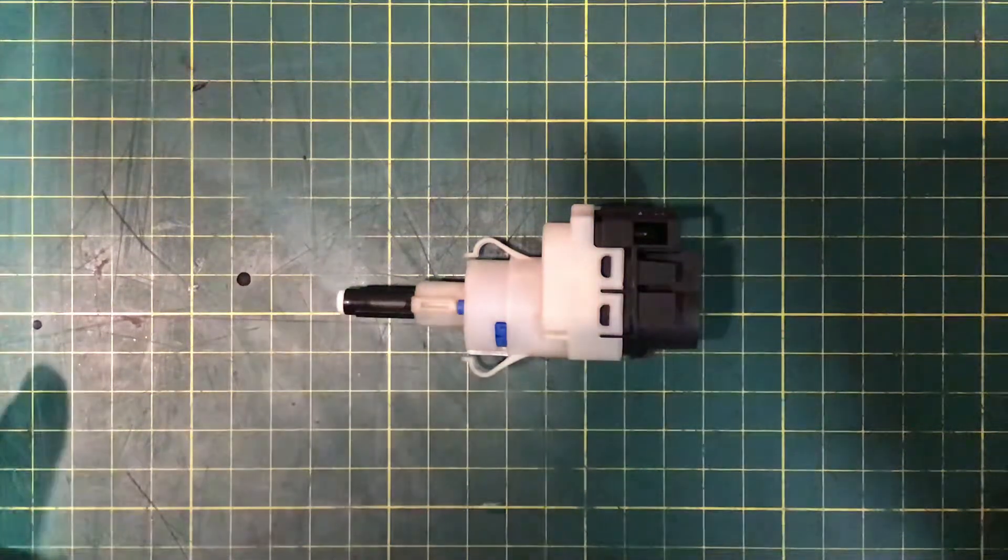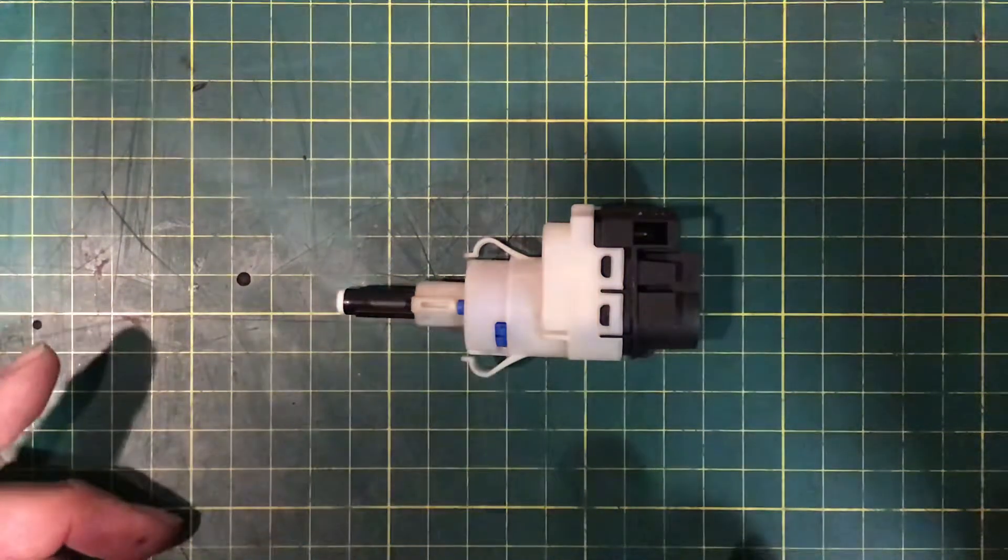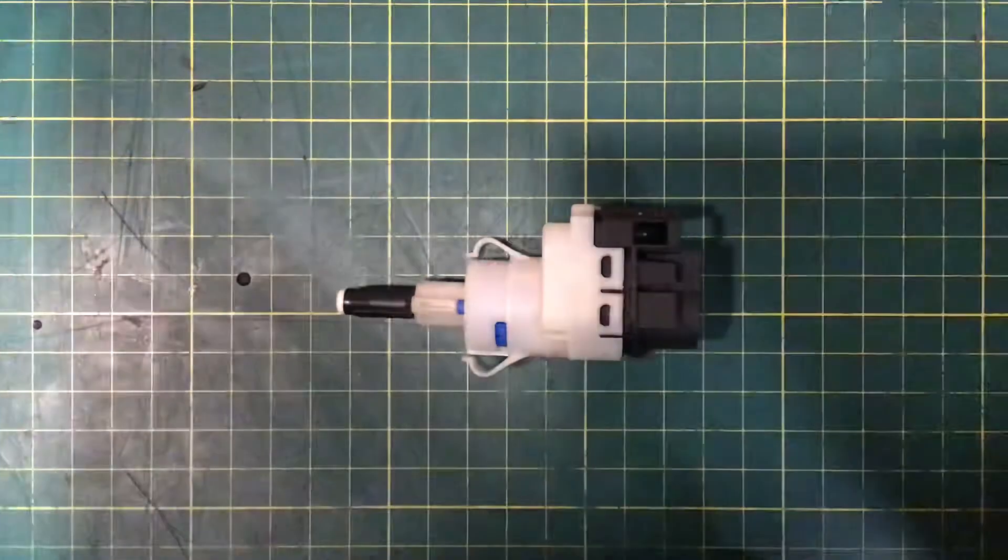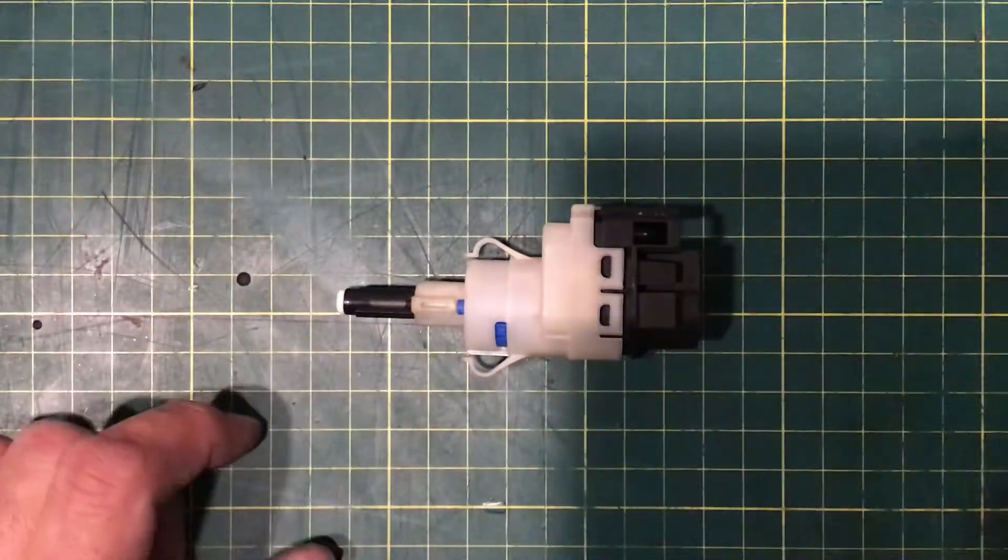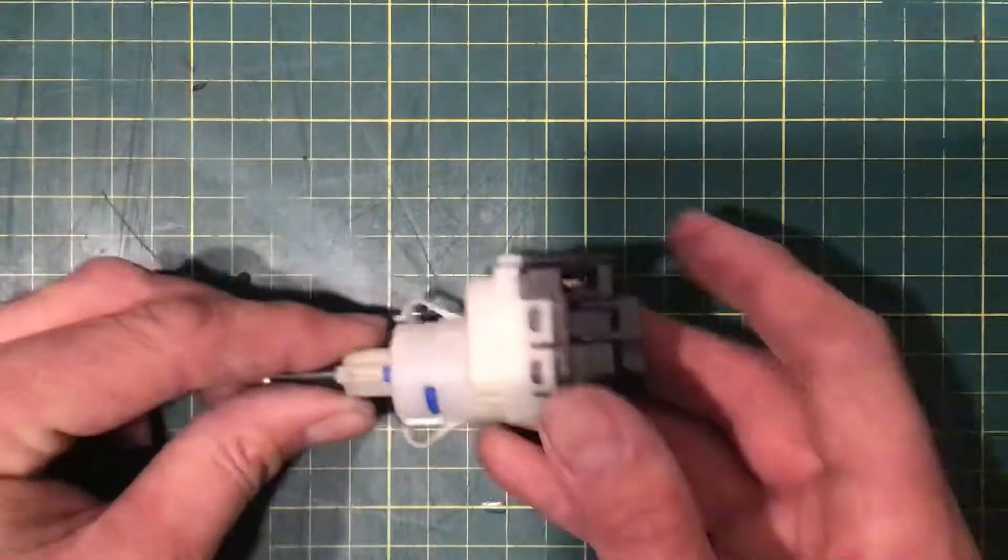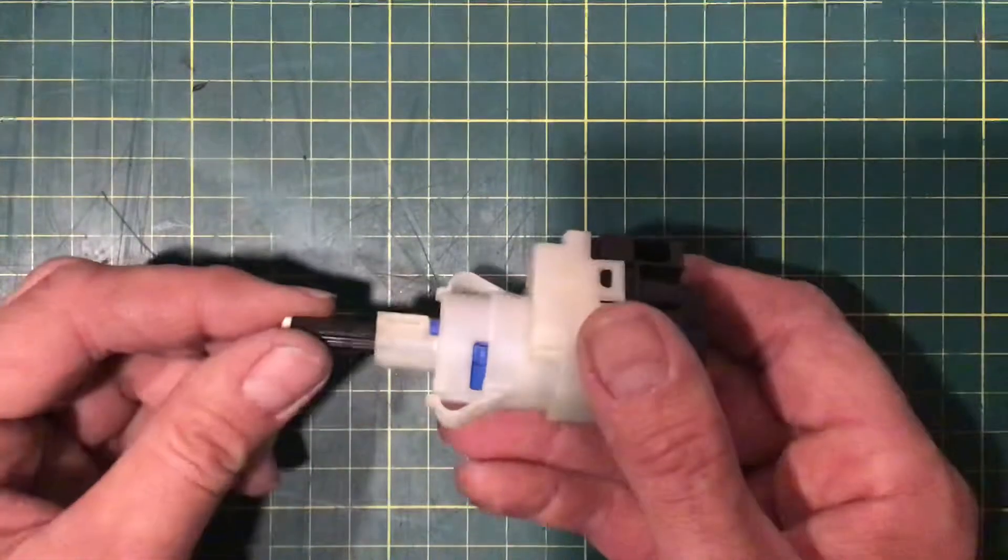Just a quick video to go through the Freelander 1 brake light switch. This is the later type that Land Rover used. There's a little bit of confusion about how these work and there's a few things I'd like to know myself really.